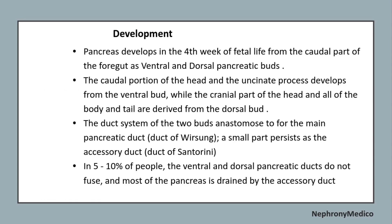Regarding development of the pancreas: the pancreas develops in the fourth week of fetal life from the caudal part of the foregut as ventral and dorsal pancreatic buds. The caudal process of the head and the uncinate process develop from the ventral bud, while the cranial part of the head and all of the body and tail are derived from the dorsal bud. The duct systems of the two buds anastomose to form the main pancreatic duct; a small part persists as the accessory duct.